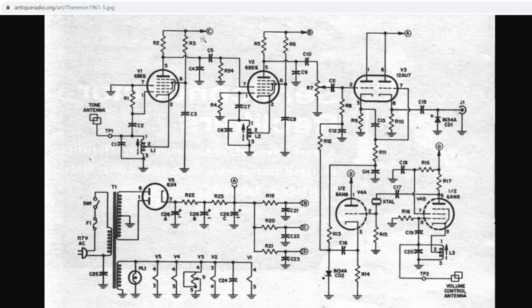Now going to the main section of the circuit, we can break it up into really four main blocks. The variable pitch oscillator, the fixed pitch oscillator, and the variable volume oscillator, and the mixer circuit.